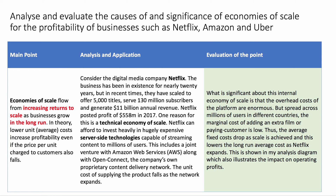Evaluating what's significant: the overhead costs of the platform are huge but spread across millions of users across different countries, and the marginal cost of adding an extra film is low. Thus the average fixed cost goes down as scale increases, bringing down the average cost in the long run for Netflix. This is why this is a significant economy of scale, and I'll now illustrate this in an analysis diagram.